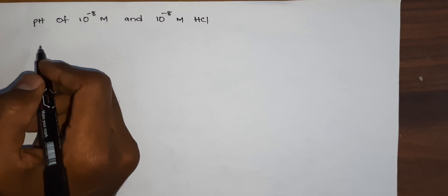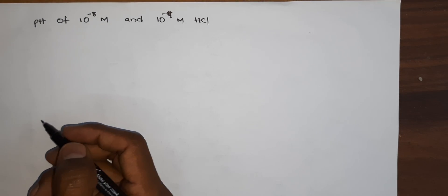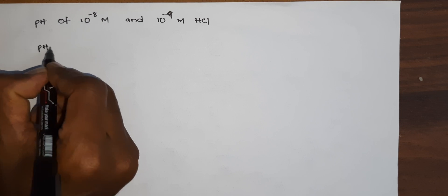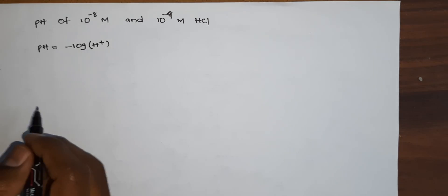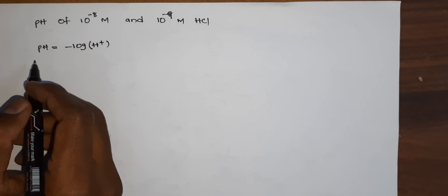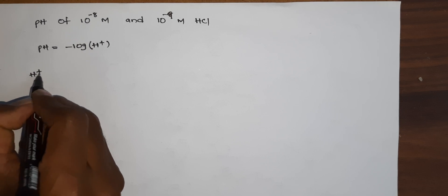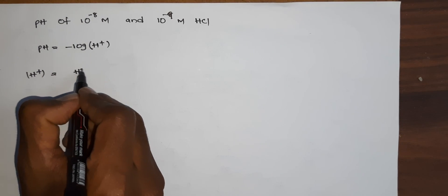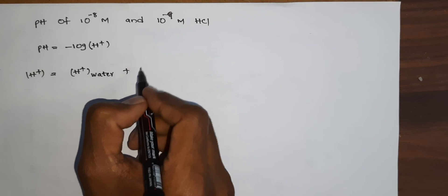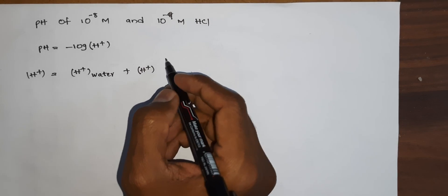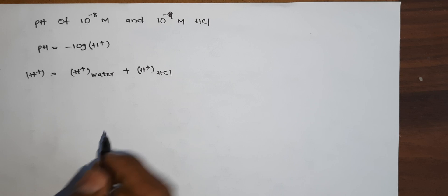Assalamu alaikum. We need to find the pH of 10 to the power of minus 8 molar and 10 to the power of minus 9 molar HCl. First of all, pH is equal to minus log of H⁺ concentration. For very dilute solutions, we have to consider both the H⁺ concentration of water as well as the H⁺ concentration of HCl.